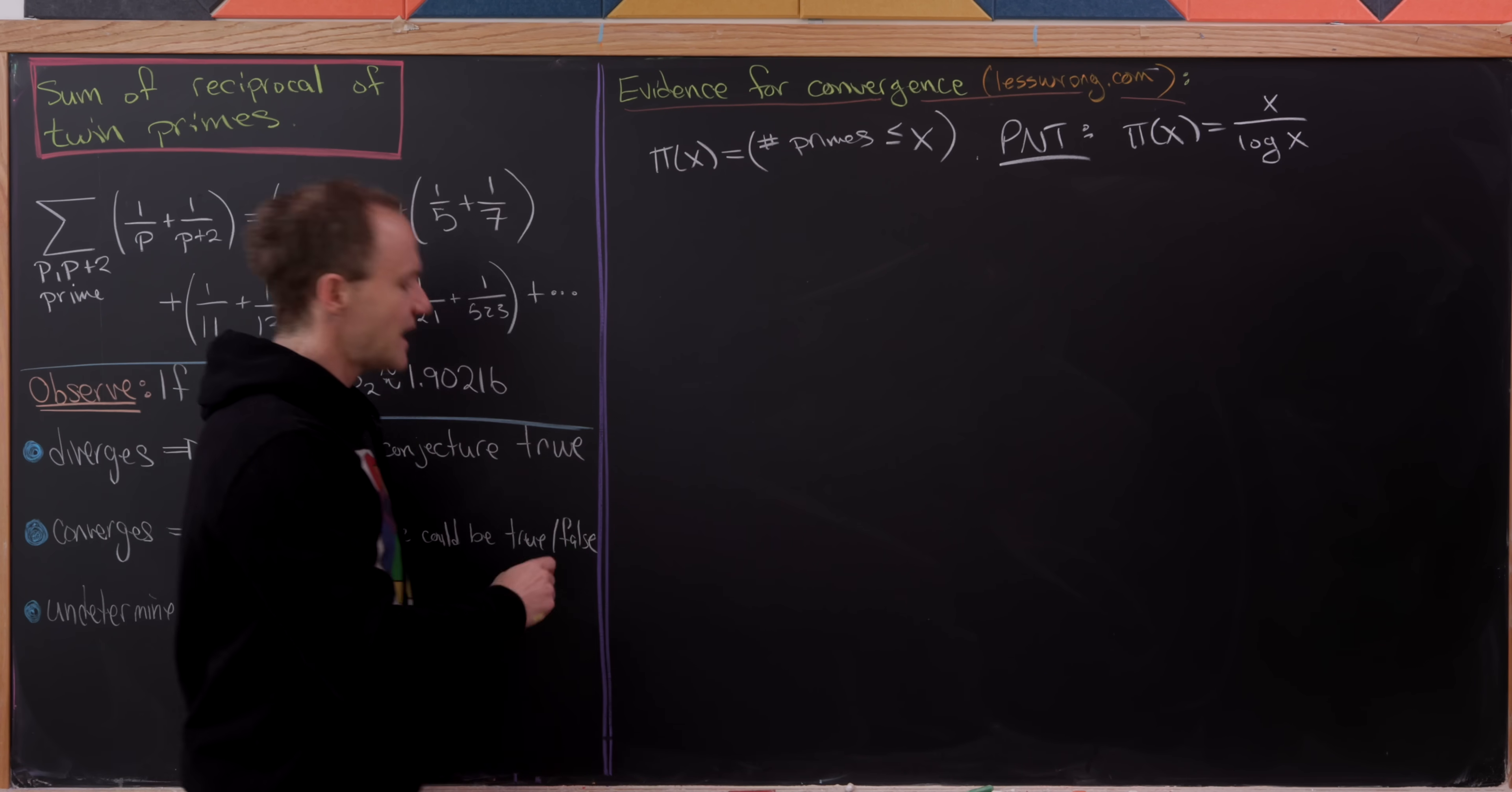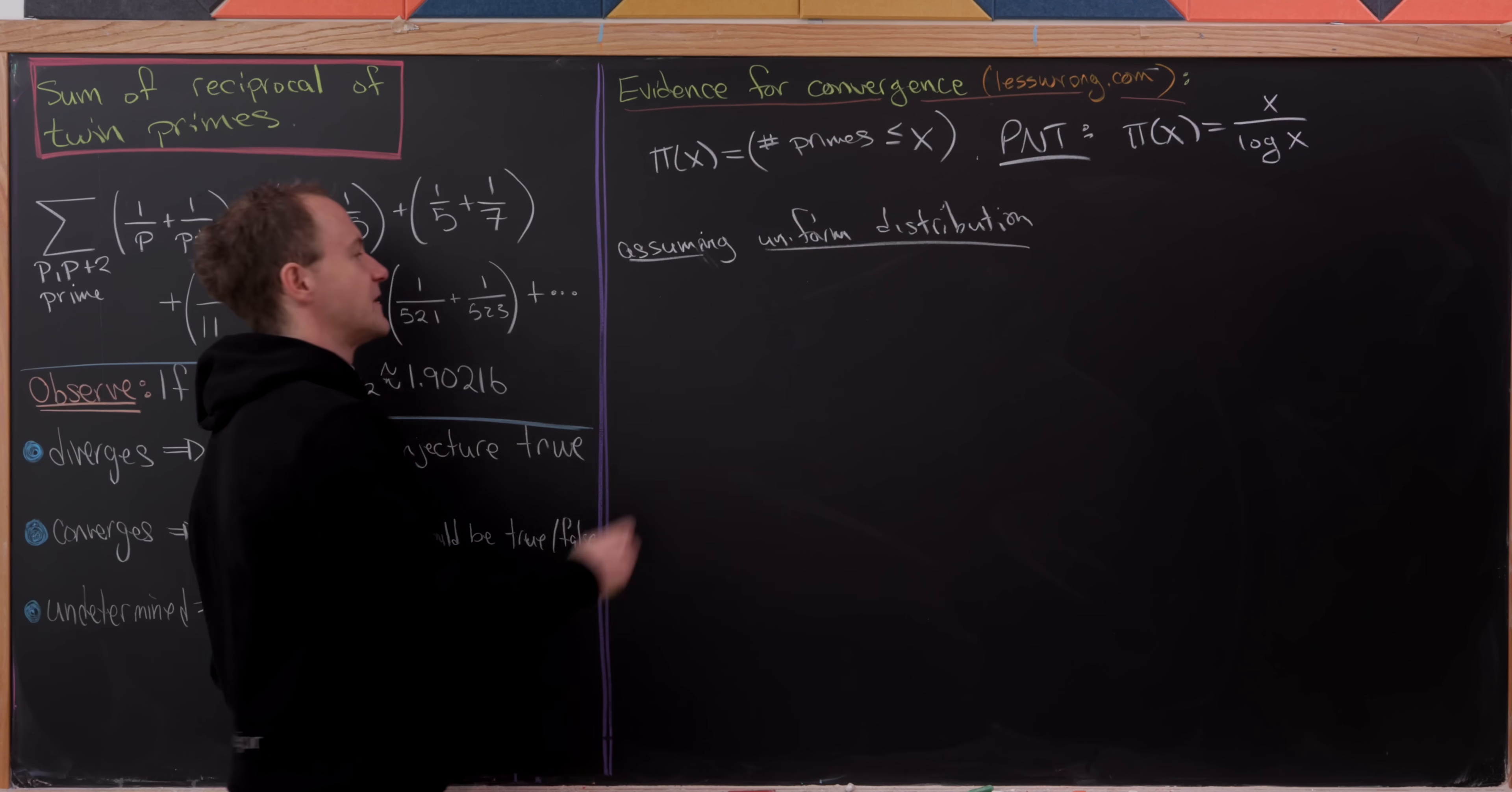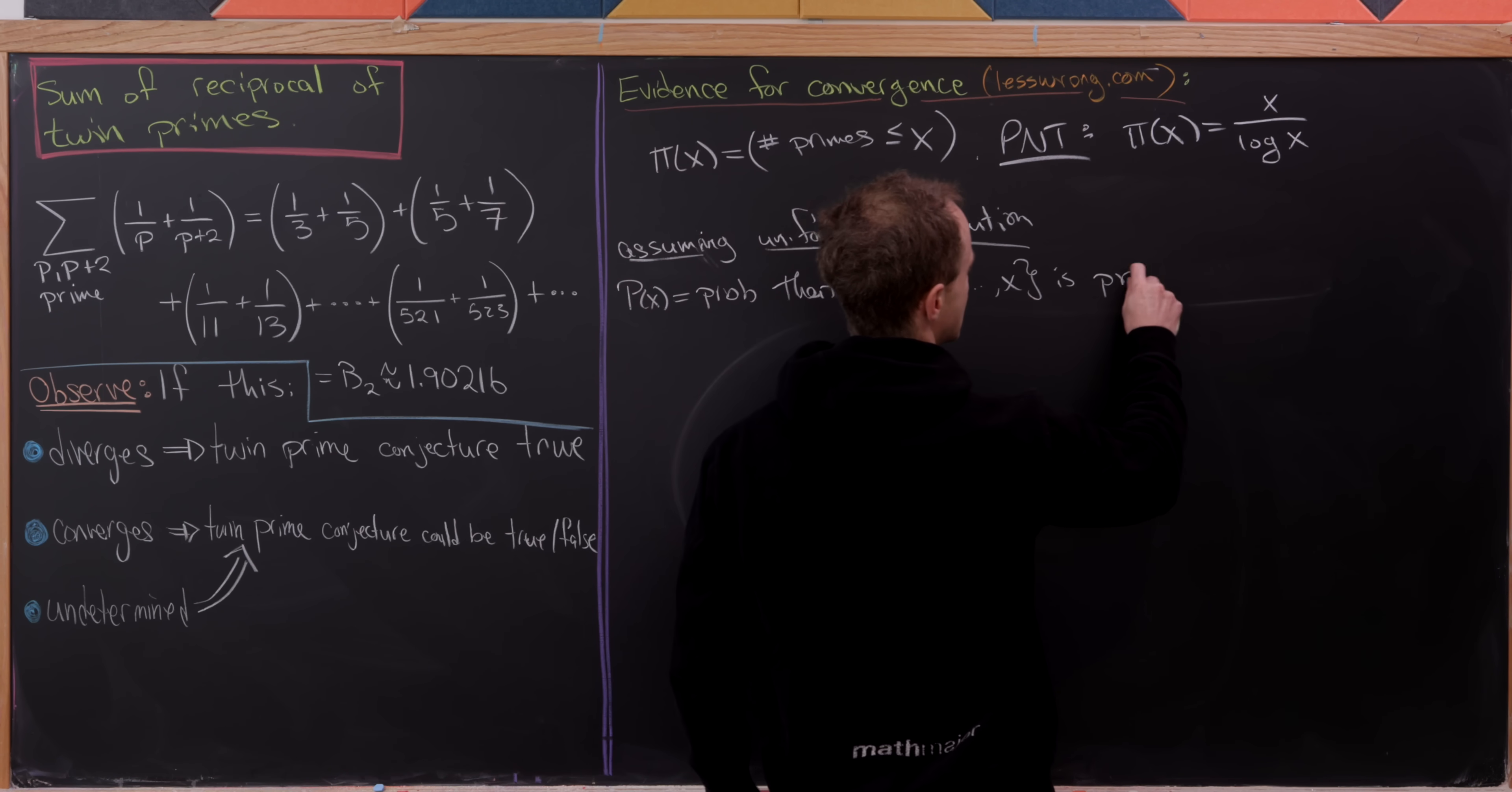And so then if we assume uniform distribution of primes, which, I mean we're already breaking rules here, we're making some sort of assumption which we don't know to be true. Then we have the following probability. So I'll just say P(x) equals the probability that some number n from the set 1, 2, up to x is prime.